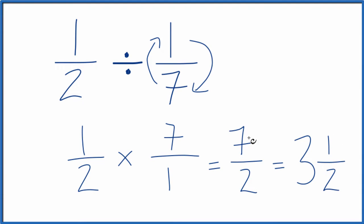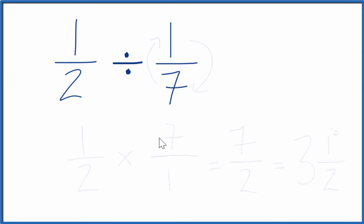And 3 and a half, that's the same thing as 7 over 2. There is another way we can do this. We could multiply 1 times 7, that would give us 7. And 2 times 1, that would give us 2. And we end up with 7 halves again, which is what we got before.